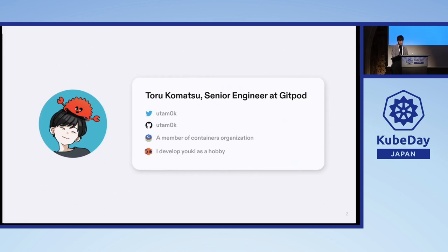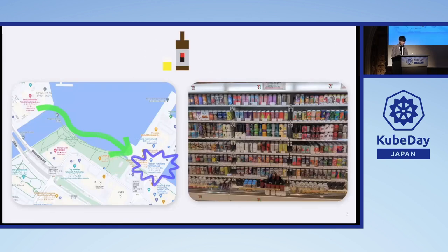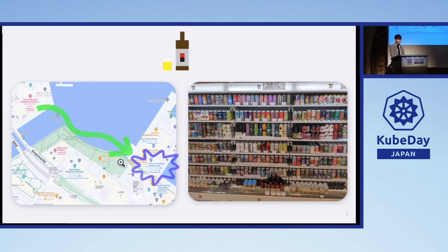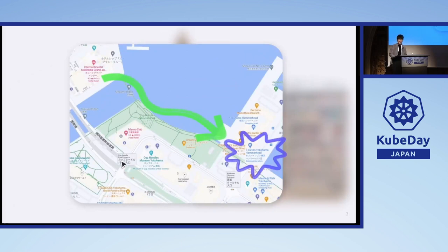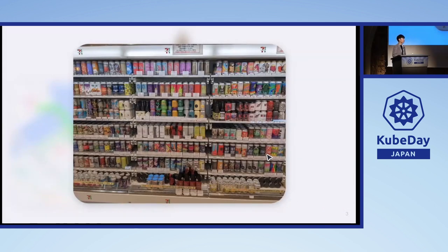By the way, I live in Yokohama City, so since you came all the way to Yokohama, I'll introduce one hidden famous sightseeing spot. Do you like beer? Just a short walk from here, there's a convenience store called Crazy 7-Eleven for Japanese beer lovers. You might want to stop by at the end of the day and pick up some Japanese or international craft beer.